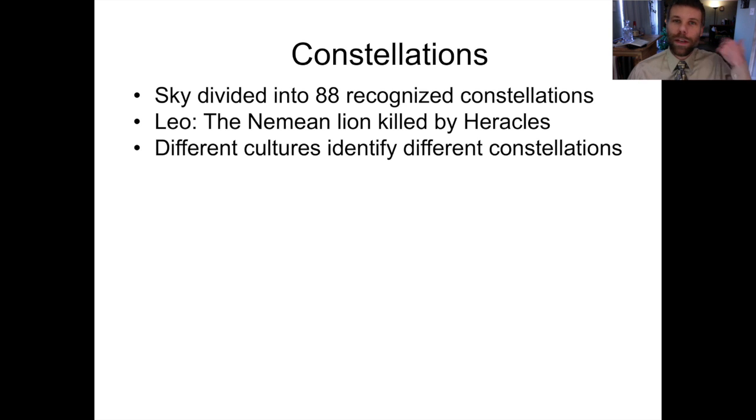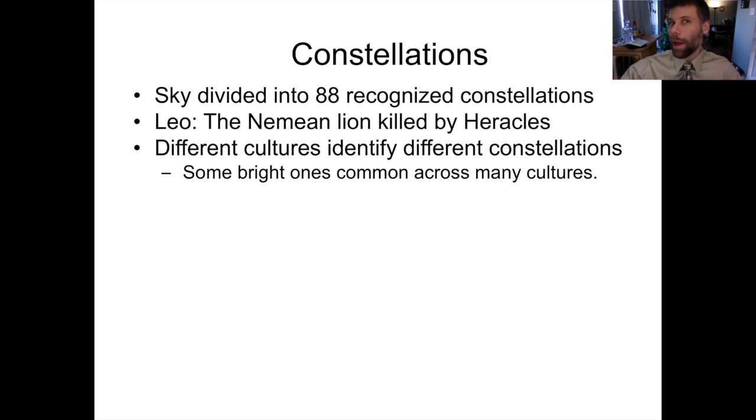So the ancient Mesopotamians, the Egyptians, the Chinese, the Mayans all had their own system of constellations. Some bright constellations, like Taurus or Orion, are found across many cultures because they're easy to find. But, of course, each culture has their own specific constellations, usually made up of considerably fainter stars.